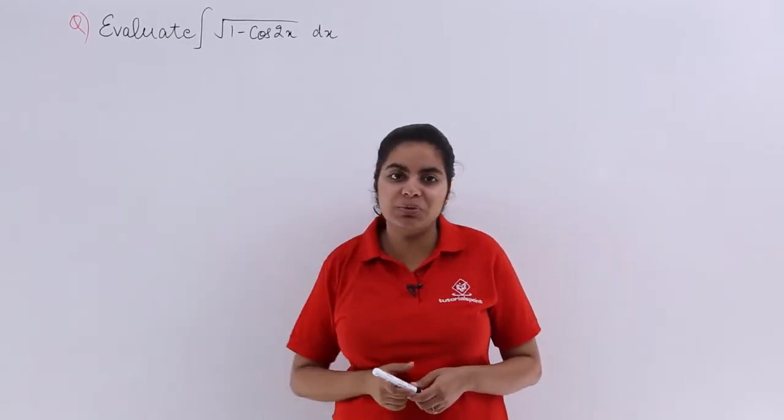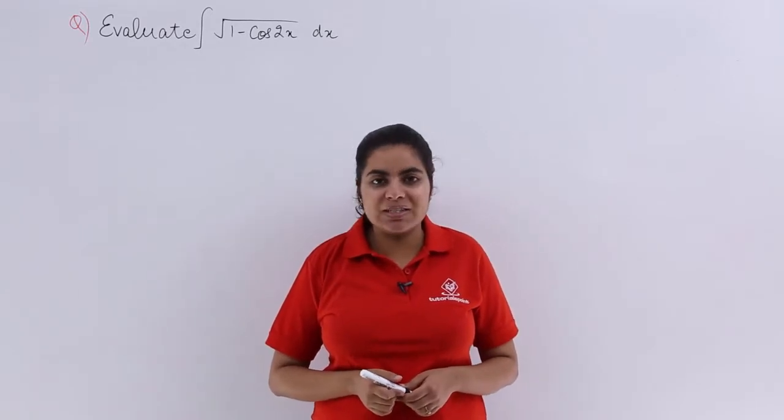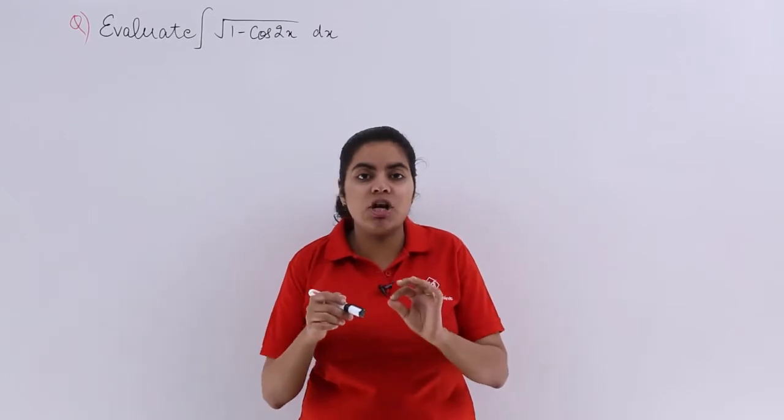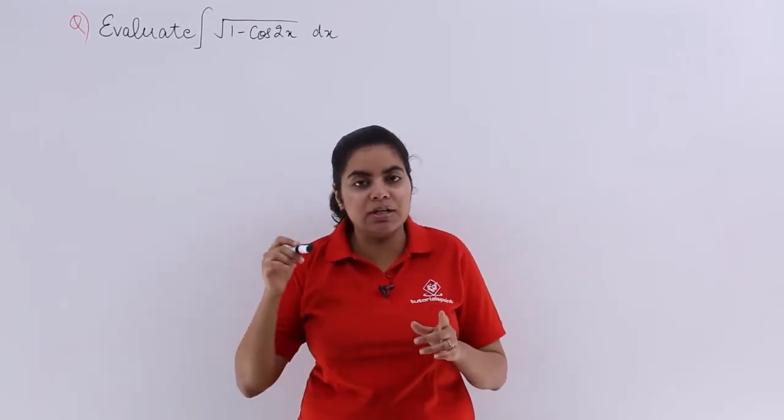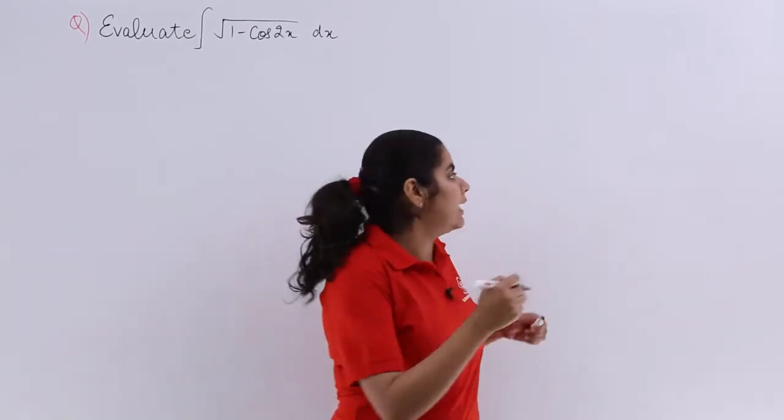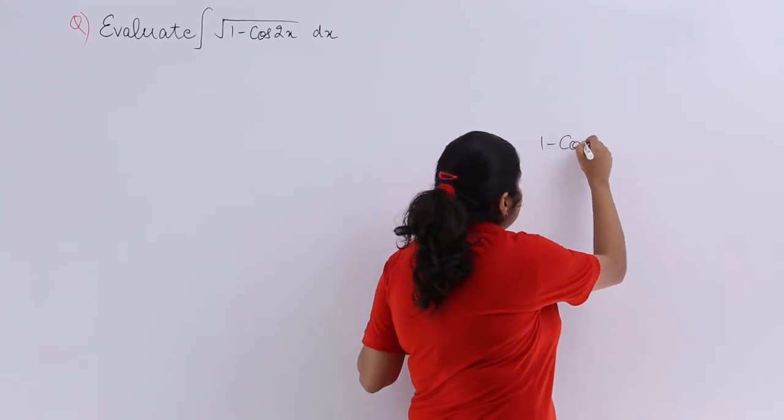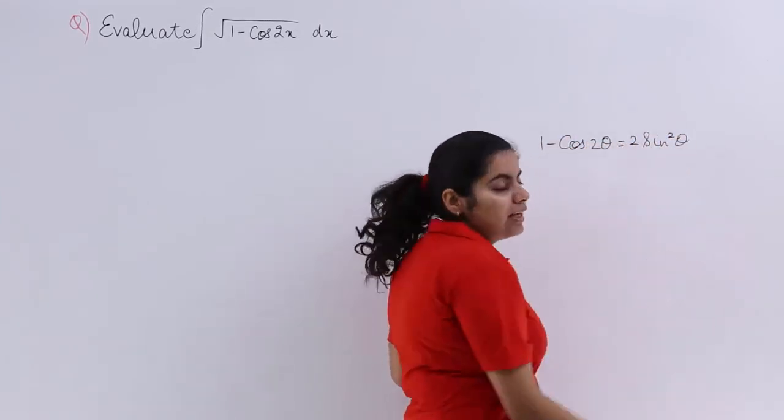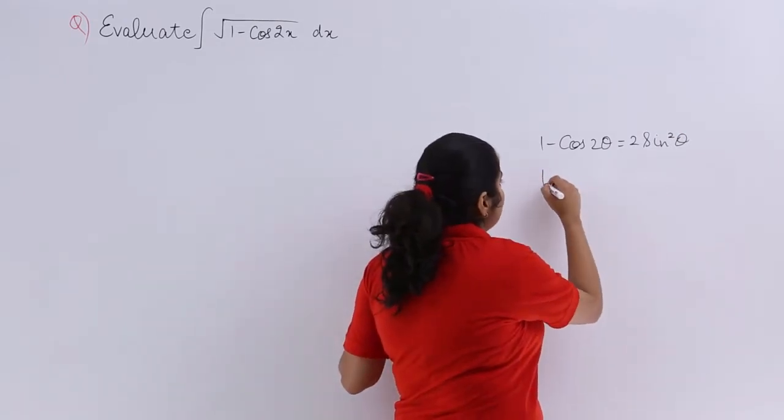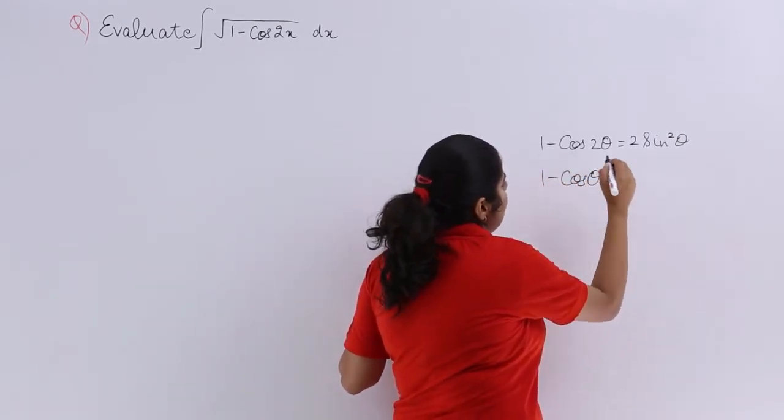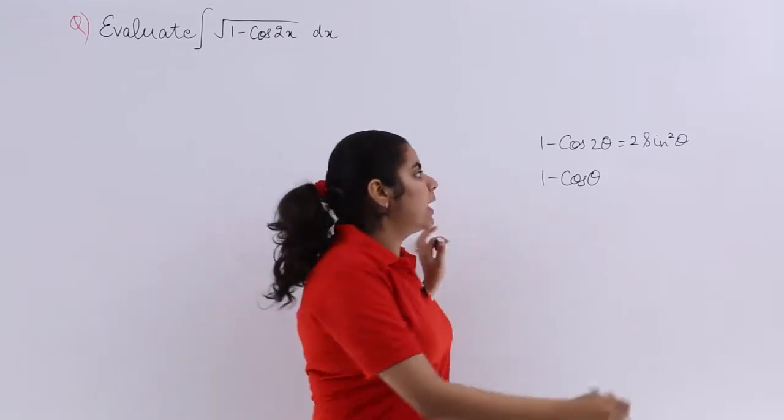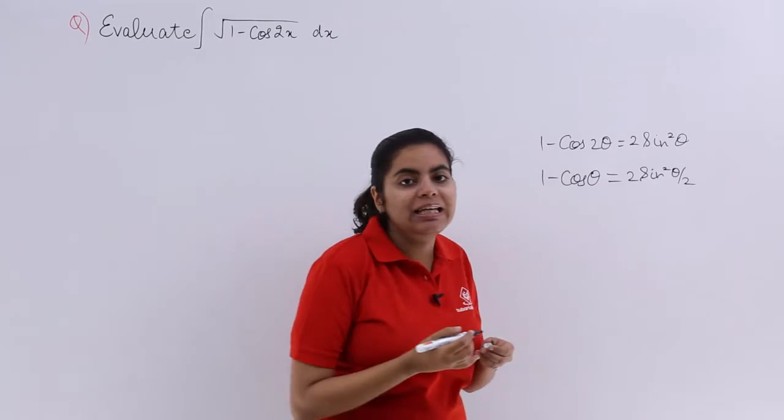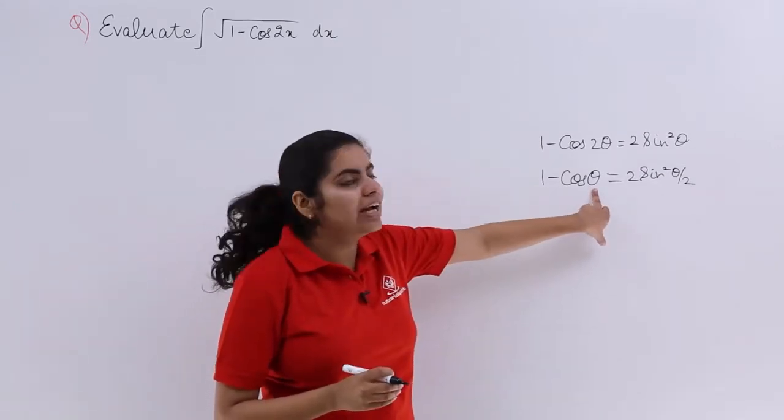What is the formula for 1-cos2θ? It is 2sin²(θ/2). What I mean is, 1-cos2θ equals 2sin²θ, but the angle is halved to θ/2. To remove confusion, 1-cosθ = 2sin²(θ/2). Basically, you halve the angle present. If the angle is θ, it becomes θ/2; if it's 2θ, it becomes θ.